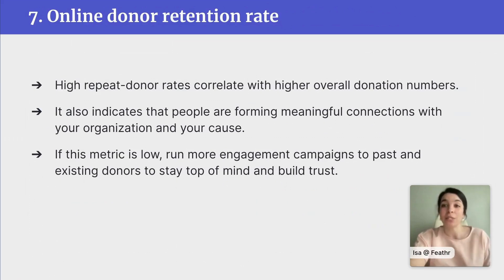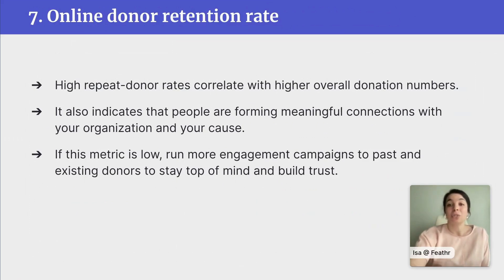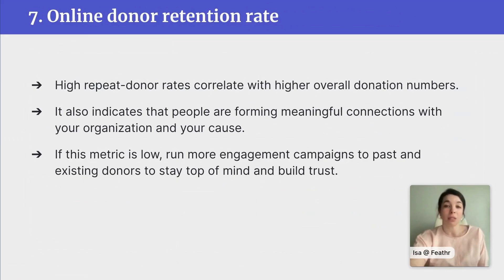The seventh and final metric I want to talk about is donor retention rates. High repeat donor rates typically correlate with higher overall donation amounts over time, and they also indicate that people are forming a long-term connection with your organization and care about your cause. If your donor retention rates are on the lower side, try running more campaigns targeting past donors — share some uplifting stories about the impact their donations have had, set up an automated email campaign on the anniversary of their donation maybe asking them to make it an annual thing, and target them with ads year-round to stay top of mind. It's all about staying engaged with them beyond that first donation, which results in more money raised over time and better relationships and trust with your donors.